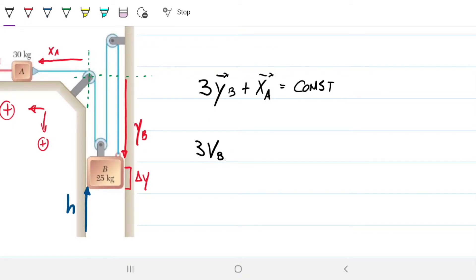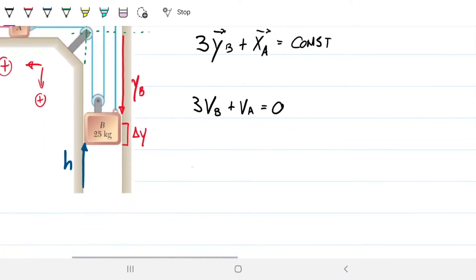So therefore, the velocity, 3 times the velocity of b plus the velocity of a has to be 0. I mean, the derivative of a constant is 0. But I'm going to write it one more time. 3 times the acceleration of b plus the acceleration of a also has to be 0 because of the same reason. Deriving with respect to time, the derivative of 0 is 0.